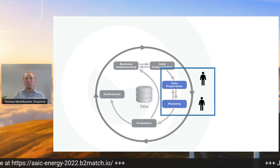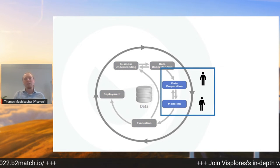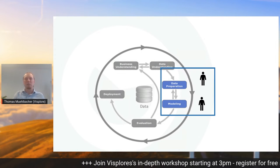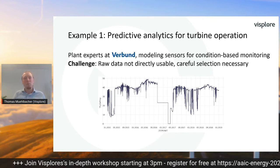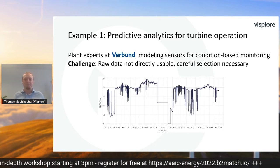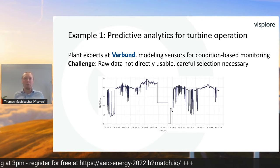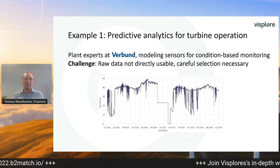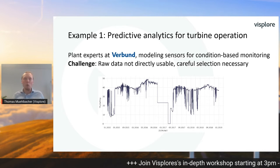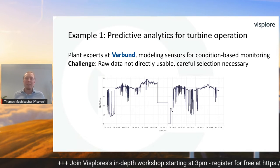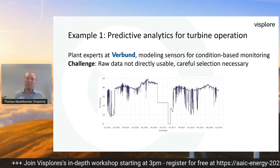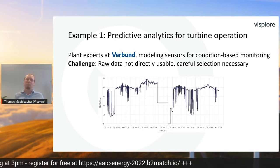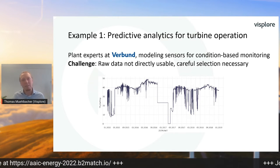Let me illustrate this with some real-world examples. The first is about involving humans in the data preparation and modeling phase of an explainable AI project. It is from Verbund, Austria's largest hydropower provider, and it is about condition-based monitoring for a turbine. The turbine is an important asset and monitoring its health is critical. There is a sensor for the oil temperature in this turbine, and the plant experts wanted to define a dynamic tolerance corridor to generate early warnings when the oil temperature doesn't behave normally. So we have to model this normal expected oil temperature.